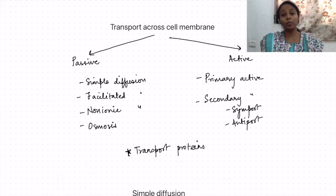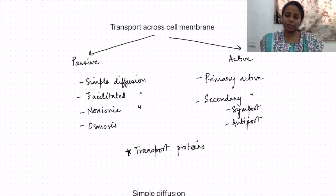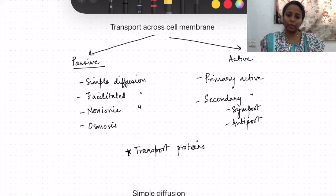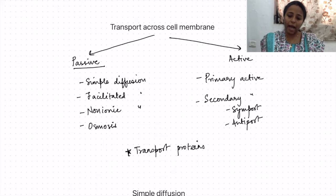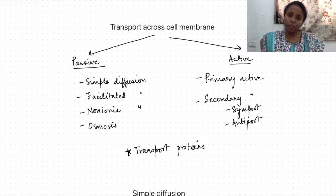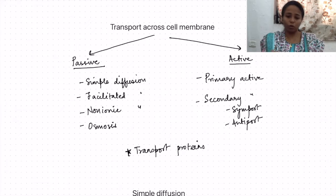Various molecules pass through the cell membrane by means of various mechanisms known as transport across cell membrane mechanisms. These mechanisms are classified into different types: passive transport mechanisms and active transport mechanisms. This classification is based fundamentally on whether energy — that is biological energy, ATP — is being required or not.